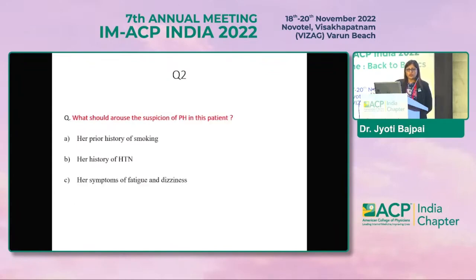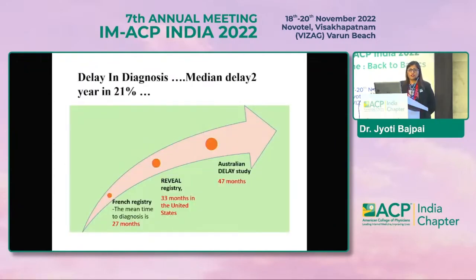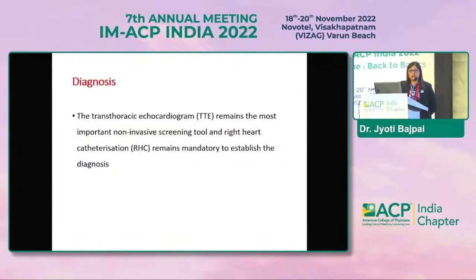Regarding suspicion of PH: when common causes of dyspnea have been ruled out, PH should be considered. Whenever you see a patient with unexplained dyspnea, first rule out common causes, then proceed to diagnose PH. Delay in diagnosis is a very important factor for prognosis. Registries show a median delay of about 2 years; the French registry showed 27 months, the US registry showed 33 months, and the Australian registry showed 47 months of delay in PH diagnosis. Diagnosis remains very challenging.